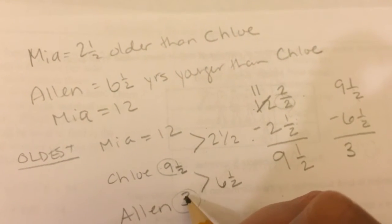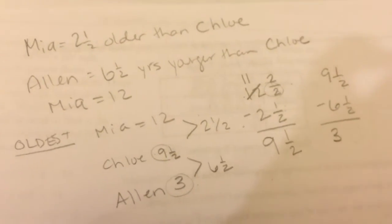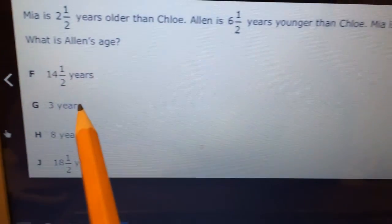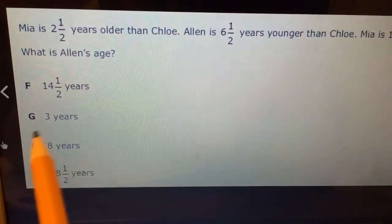So Alan is 3 years old. And if I look at my answer choices, G is the answer. G, 3 years. That's our answer.